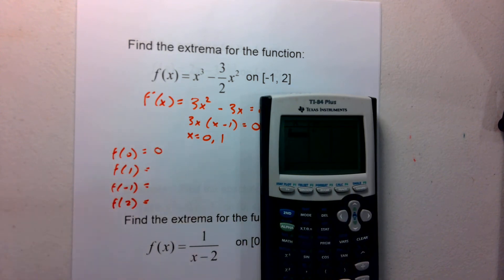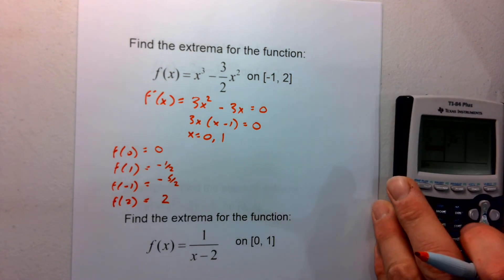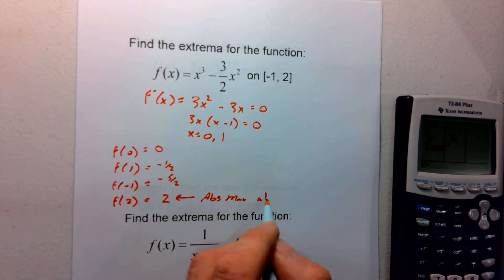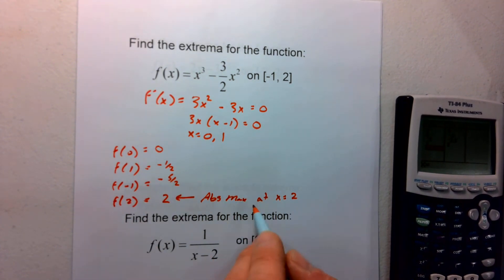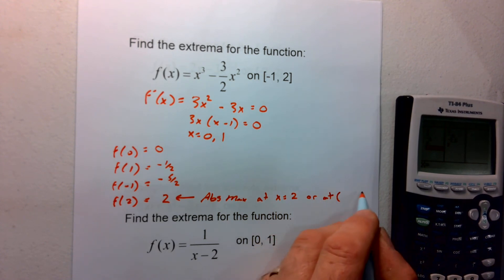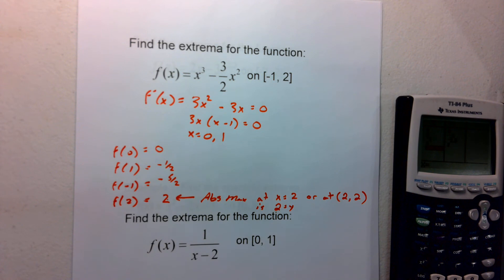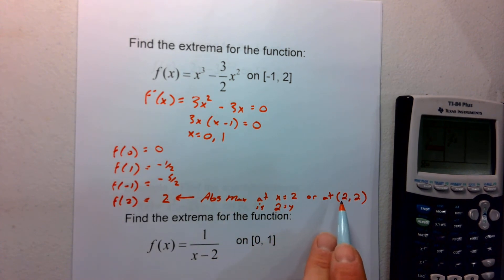If I type in 0, I get 0. If I type in 1, I get negative one-half. If I type in negative 1, I get negative two-and-a-half, or negative 5/2. And 2 gives me 2. So the absolute maximum is going to occur at the highest value, which is 2. I have an absolute maximum at x equals 2, or at the point (2, 2). I can also say the absolute maximum is y equals 2.